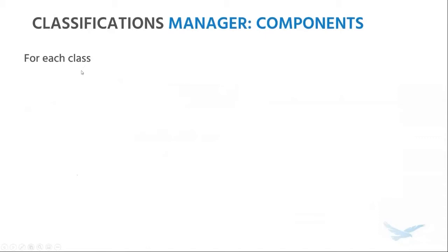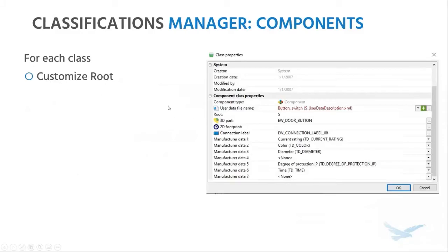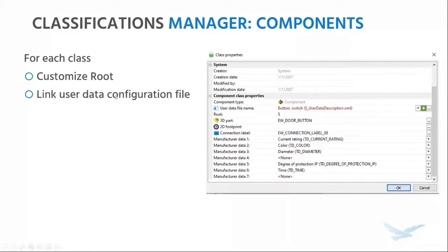You can take it further with classes — for each class, you can set up properties that propagate to all items in that class, including part numbers. In the properties of the class, you can identify a default route. So if you've noticed that all circuit breakers default to Q as a route, or all motors start with M, that's where this information comes from. You can also link a specific user data configuration file to each class. There are about 20 available user data fields that are typically renamed to reflect custom properties, and this renaming information is retained in the user data configuration file. By linking a class to a unique configuration file, you're essentially setting up each class to have its own set of custom properties.